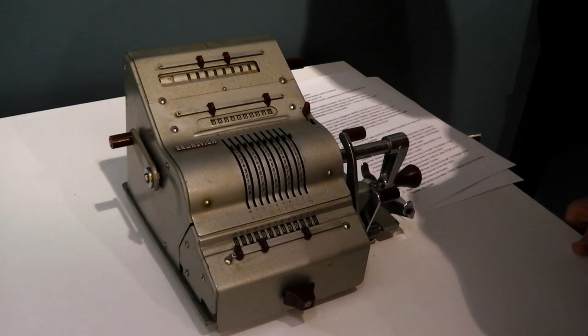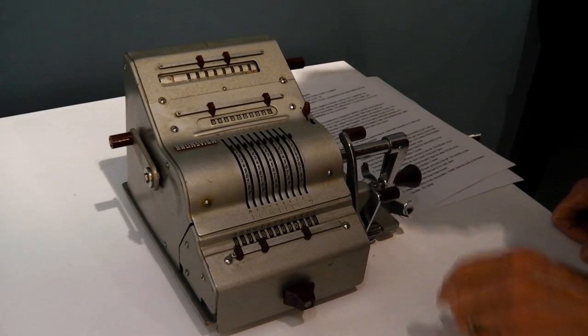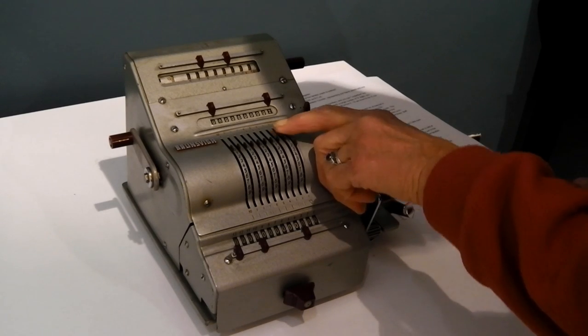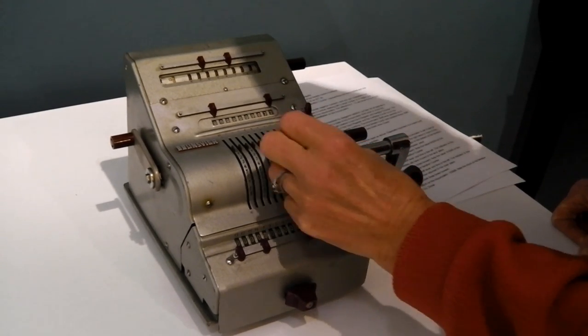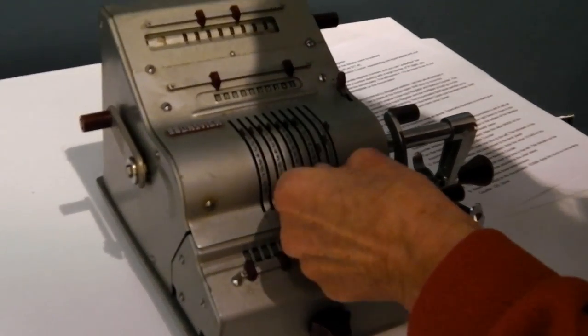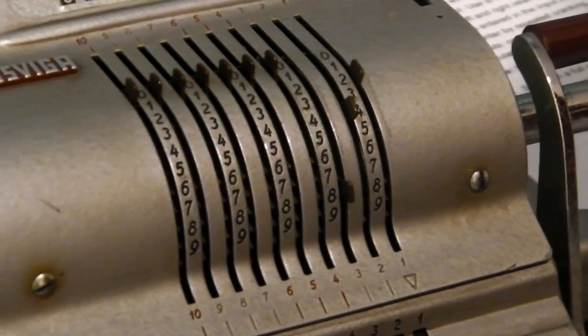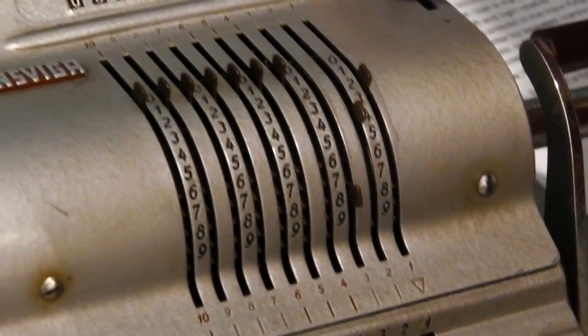We're going to multiply 842 by 123. So we put 2, 4, 8 into the register and that shows up there.